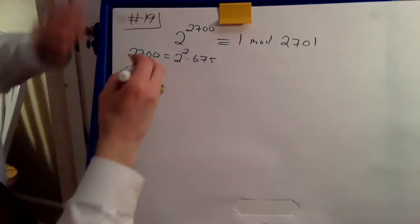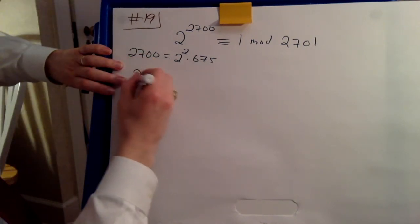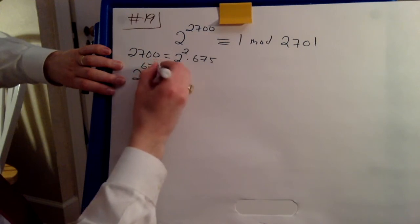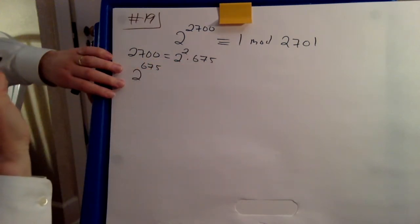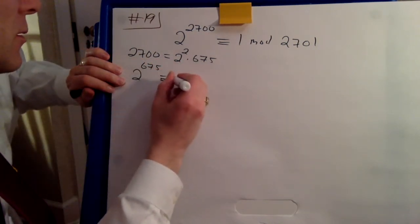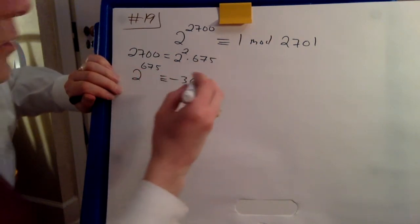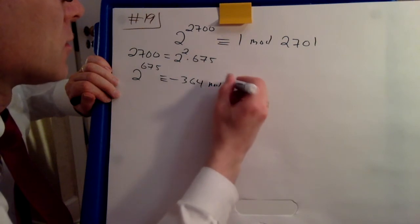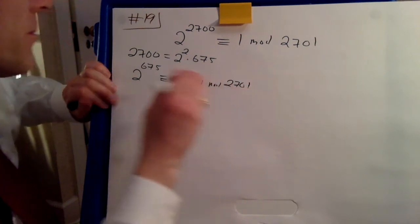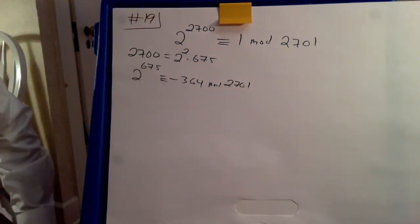And now, they were nice to us. 2 to the 675 minus 5, to tell us the content minus 364 mod 2071. Aha!